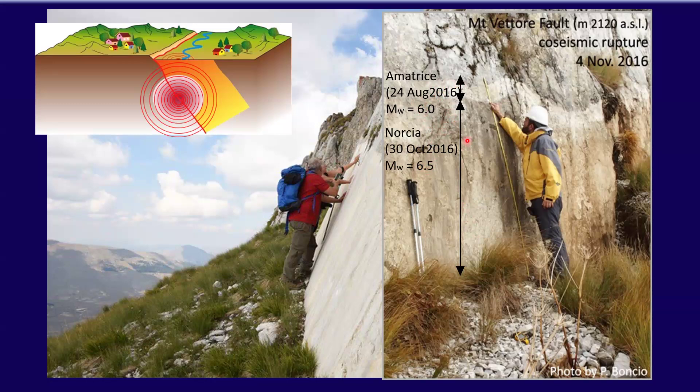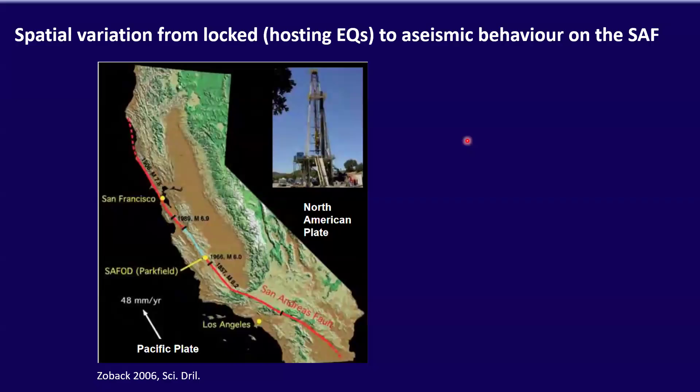So if you speak with a field geologist, they're telling you that the fault architecture in reality is very complex. Faults can accommodate the plate motion in several ways. And the most iconic example is the San Andreas Fault that has some portions that are creeping, so they don't cause earthquakes, and other regions that are locked and hosted the earthquakes in the past.